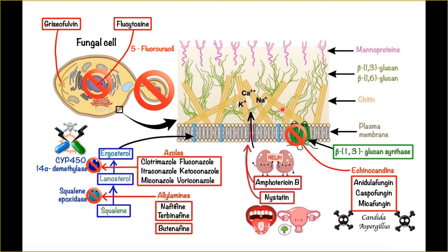The first group of drugs is the inhibitors of ergosterol synthesis. This is the most commonly used group because fungi use ergosterol instead of phospholipids found in most animal cells for structural purposes. Ergosterol synthesis is inhibited by the azole group, which includes clotrimazole, fluconazole, ketoconazole, itraconazole, miconazole, and voriconazole. The most commonly used drug is fluconazole, which has an additional fluorinated residue that gives greater activity compared to clotrimazole, the prototype of this drug group.